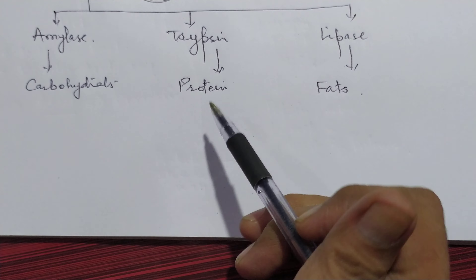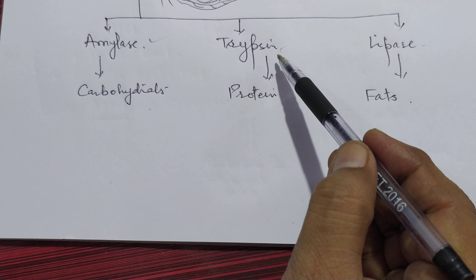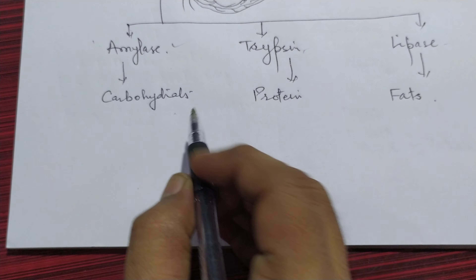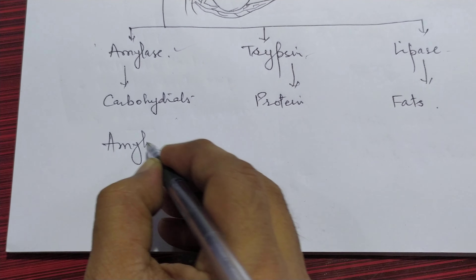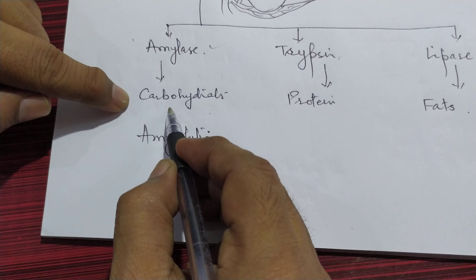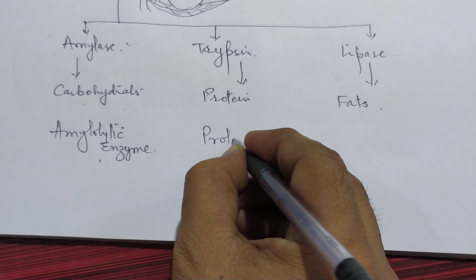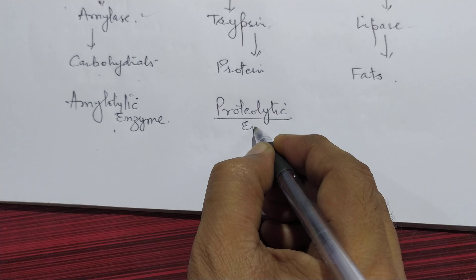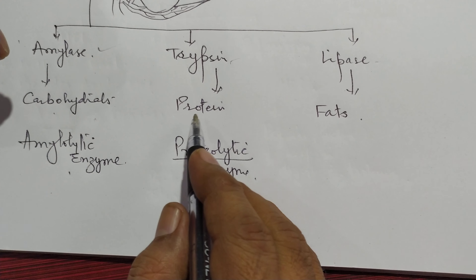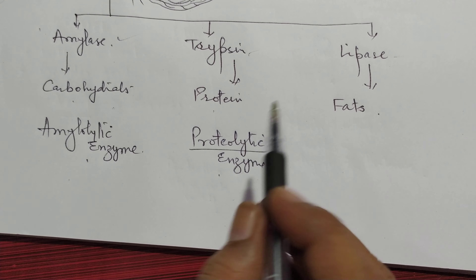So, the three enzymes present in pancreatic juice are amylase, trypsin, and lipase. The enzymes which help in the digestion of carbohydrates are known as amylases — an example is amylase. The enzymes which help in the digestion of protein are known as proteolytic enzymes — an example is trypsin. One more proteolytic enzyme was also present in the gastric juice: that was pepsin.